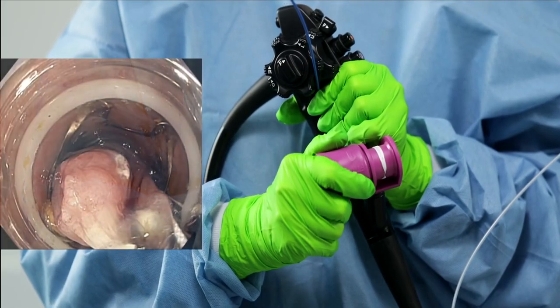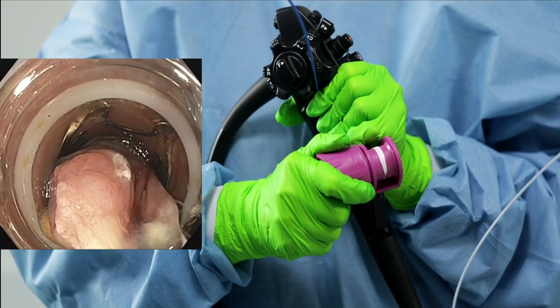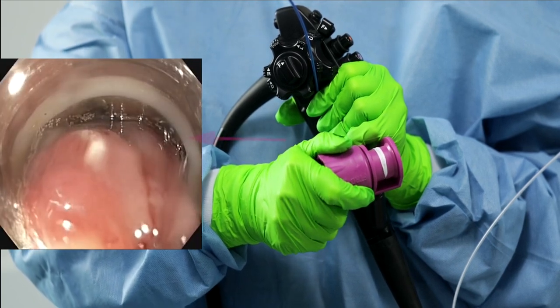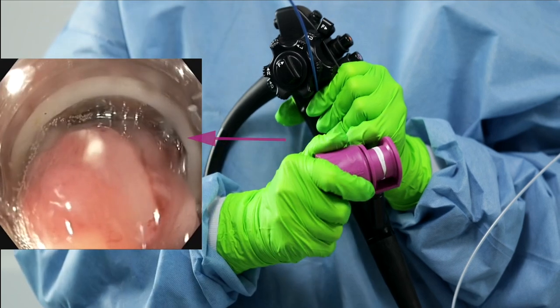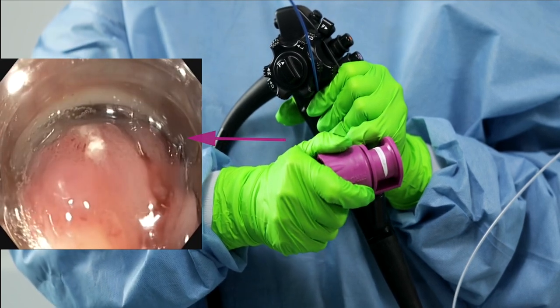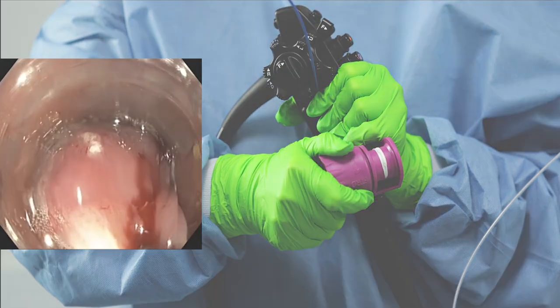Especially when the endoscope is twisted, for example in the colon, the hand wheel should be turned as far as possible. It may be necessary to reach back and turn it again, so that the force can be transmitted and the clip applied.